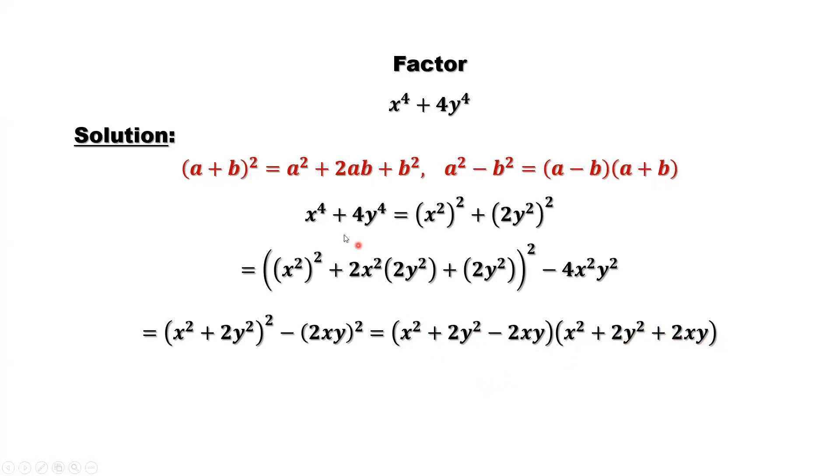In summary, we have x^4 + 4y^4 equals (x^2 + 2y^2 - 2xy) times (x^2 + 2y^2 + 2xy). This is the answer.